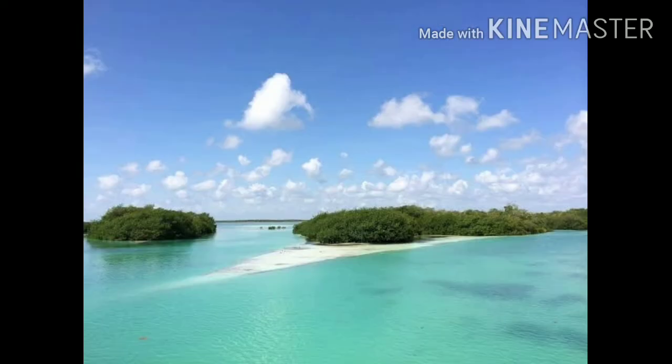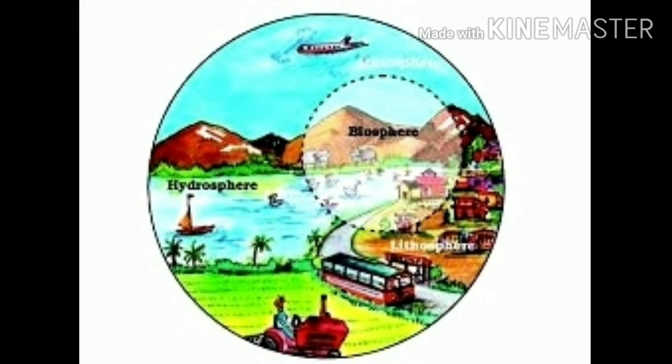The next domain is biosphere, which consists of all living things. To summarize the four domains visually: lithosphere is where buildings and roads are built; hydrosphere is where birds swim and people row boats; atmosphere is where planes fly; and biosphere includes all human beings, animals, birds, and the air.